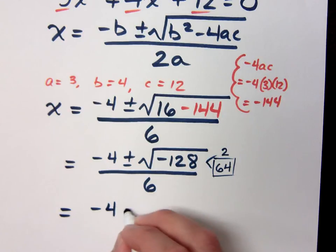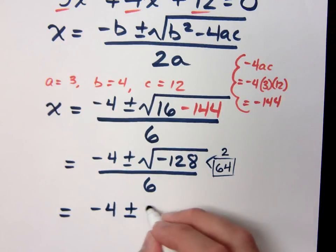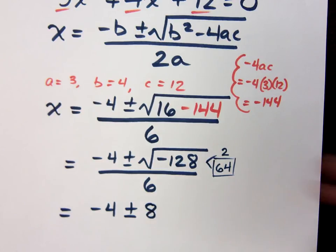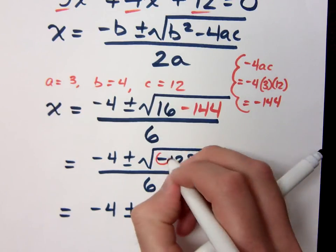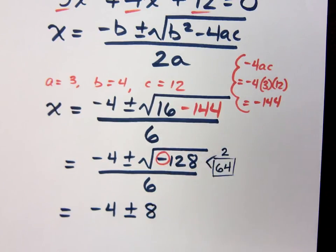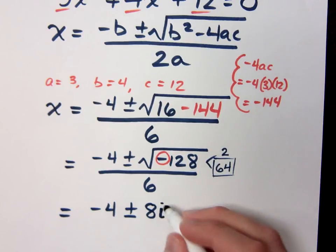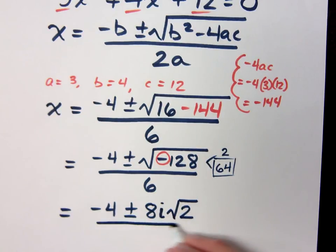So I get the negative 4 plus or minus. Now, not only does the 64 come out of the radical as an 8, but you also have this negative. And that negative will give you the factor of i. And then it's the 2 that stays inside the radical. And again, that's all over 6.